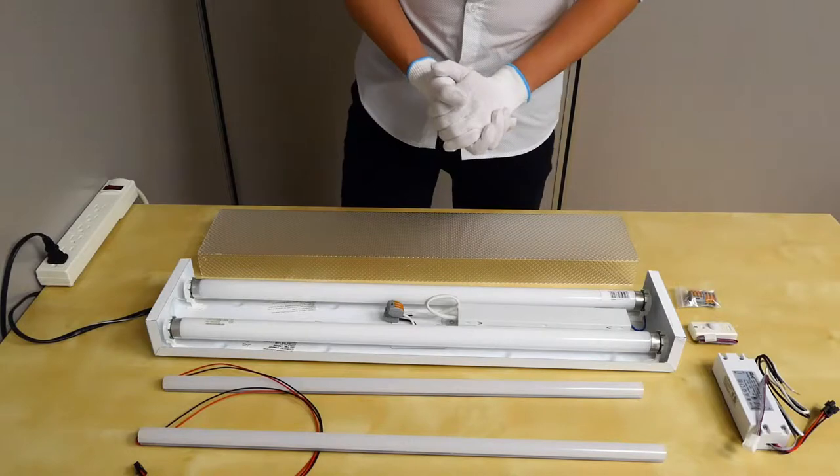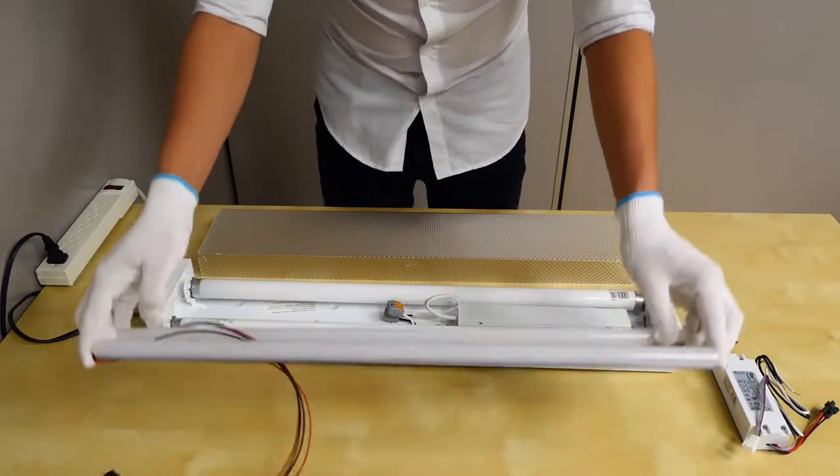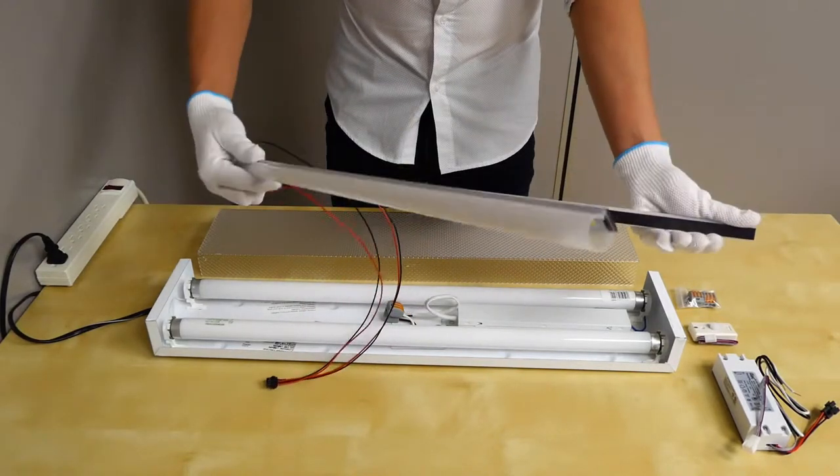Right now we're going to be gathering the things that are included with your SLC conversion kit. First is your LED lights, which are also magnetic, as you can see.